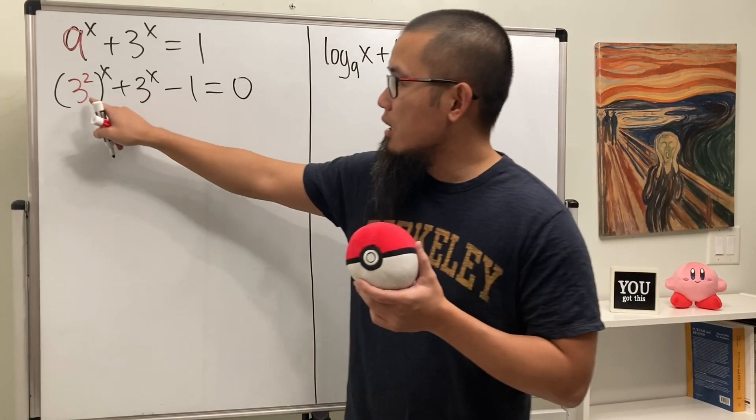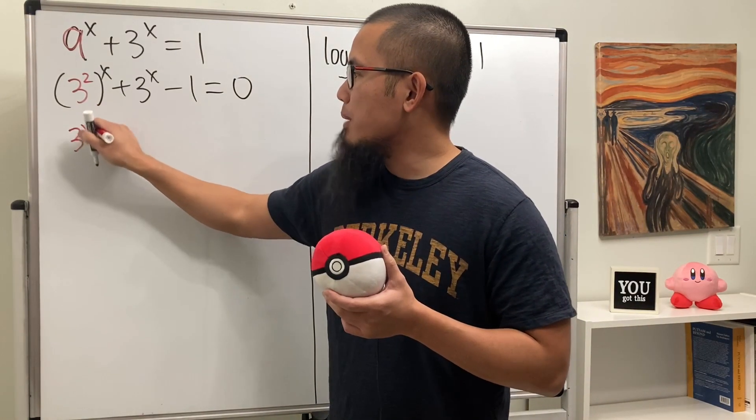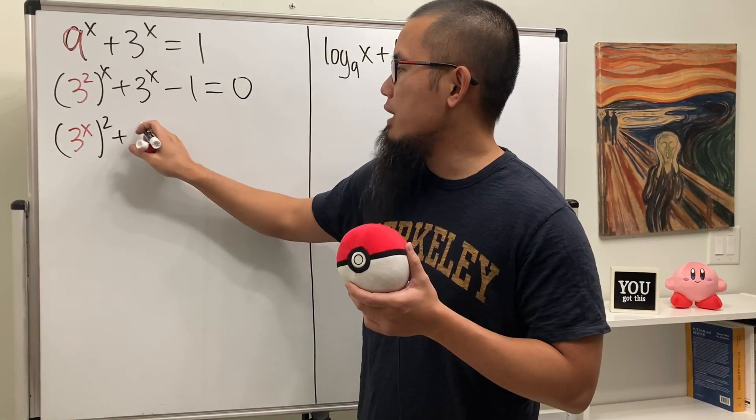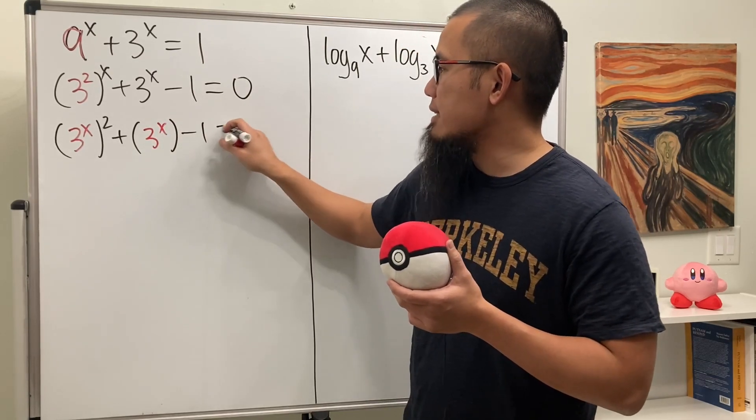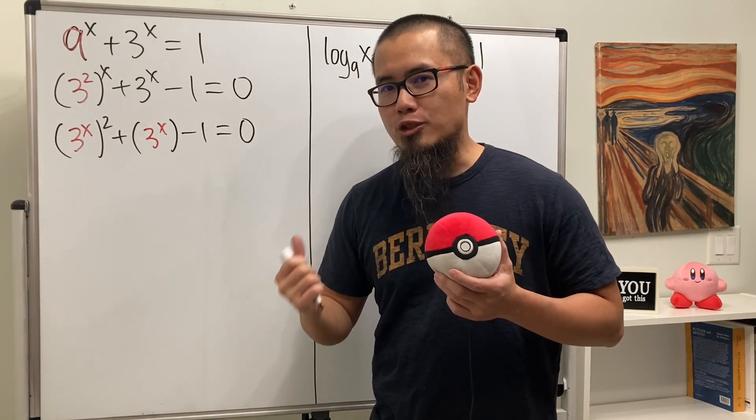The whole key is that we have 9, which is 3 squared. We can rewrite this as 3 to the x power first and then to the second power, and for this guy I'm just going to put it as plus 3 to the x power and then minus 1, and that's equal to 0. As you can see, this is actually a quadratic equation now, but in terms of 3 to the x.